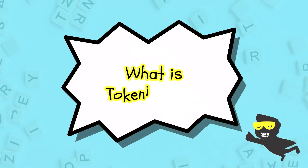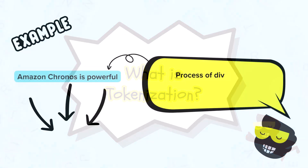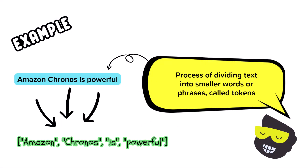Welcome back. In this video, we are going to tackle tokenization. You need to understand why it's important and how to implement it in Python. Tokenization is the process of breaking down text into smaller pieces, usually words or phrases called tokens.